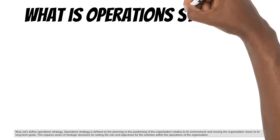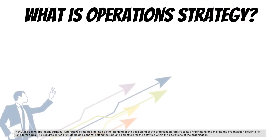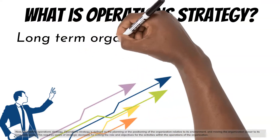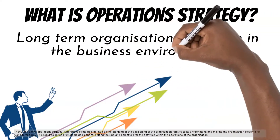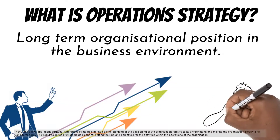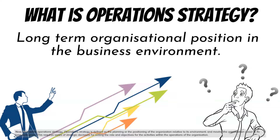Let's define operations strategy. Operations strategy is defined as the planning or the positioning of the organization relative to its environment, and moving the organization closer to its long-term goals. This requires a series of strategic decisions for setting the role and objectives for the activities within the operations of the organization.